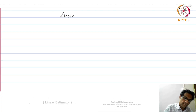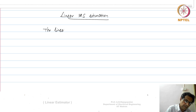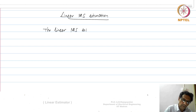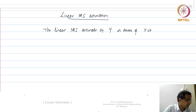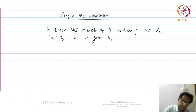We are looking at the linear mean square estimator, which is estimation of a random variable y from a number of random variables x. The linear mean square estimate of y in terms of random variables xᵢ, i equal to 1 to n, is given by ŷ = Σaᵢxᵢ.